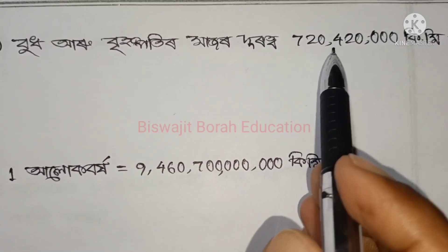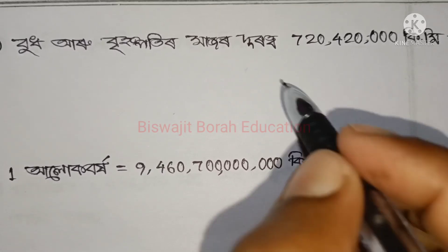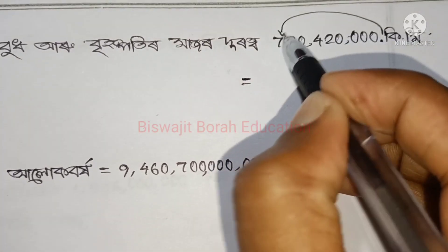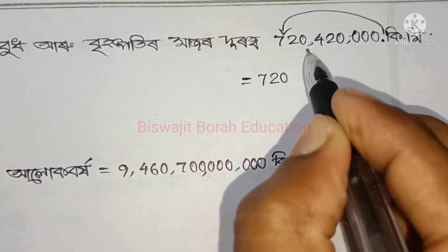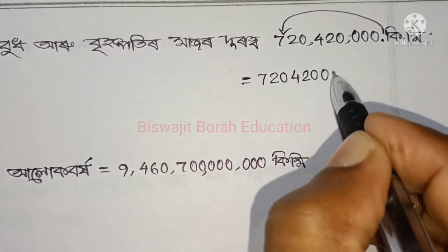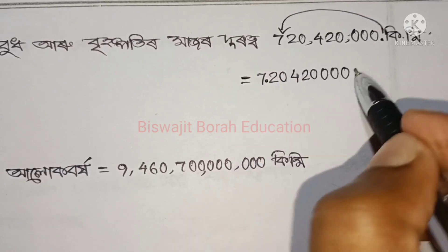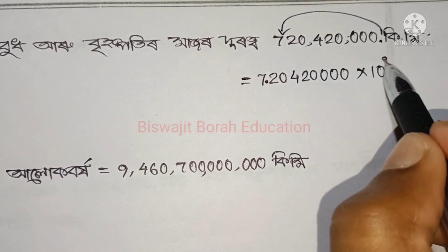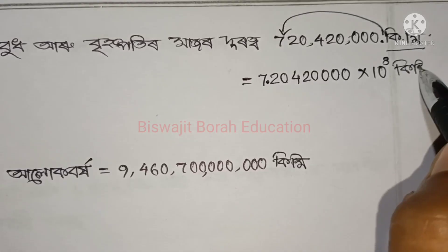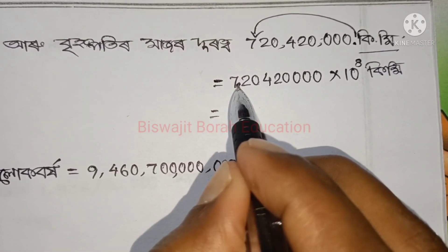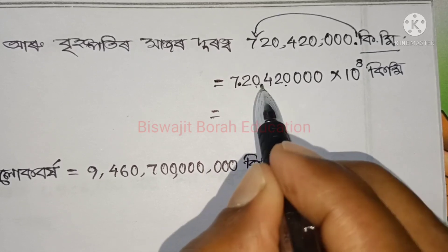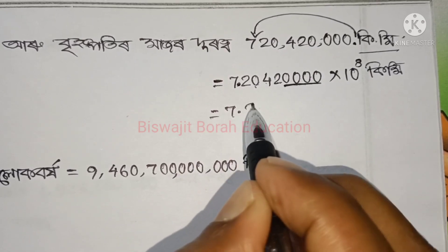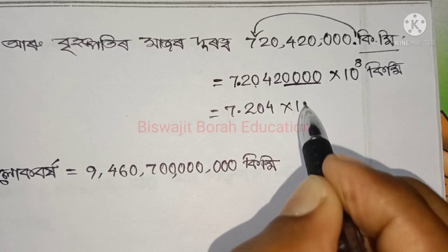This is 7204000 km — a mathematics problem. So 720 — that is four, two, zero, one, zero, zero, zero. We add equals — milli divided by counter — will give us into power. Times 10 to the power 4. So the answer becomes 7.204 × 10⁸ km.